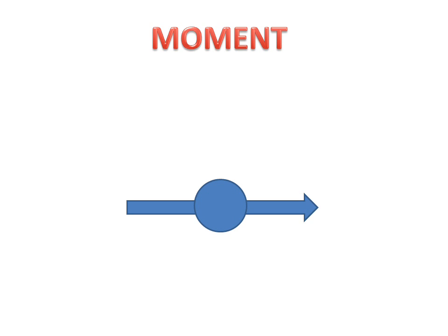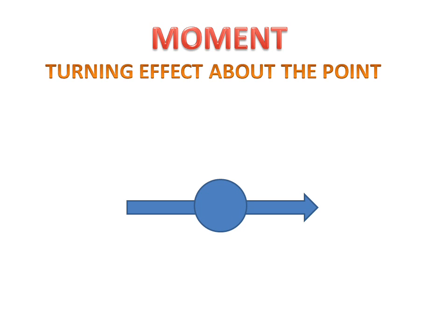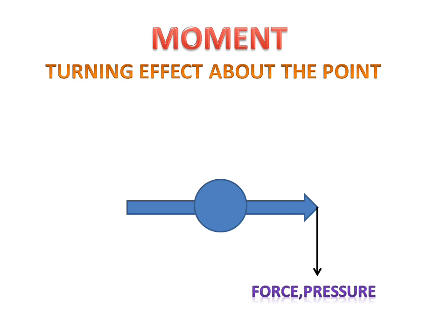Firstly, we will discuss about Moment. What is Moment? Moment is the turning effect about a point — meaning if we have a reference point, then the body will turn about this reference point, and that is called Moment. The turning effect can be produced by a physical quantity that can be measured: it can be force, pressure, mass, temperature — anything which is a physical quantity that can be measured.